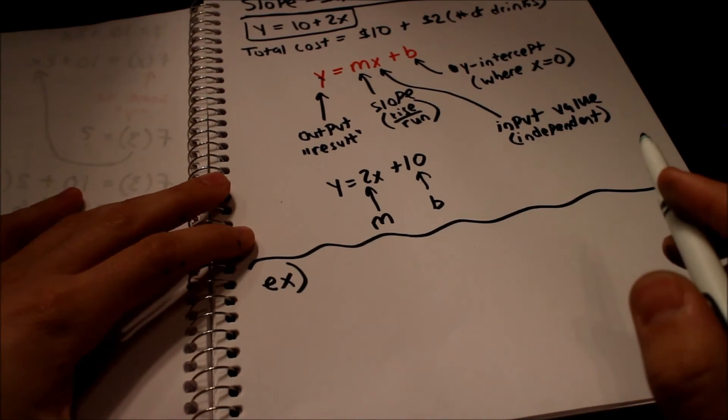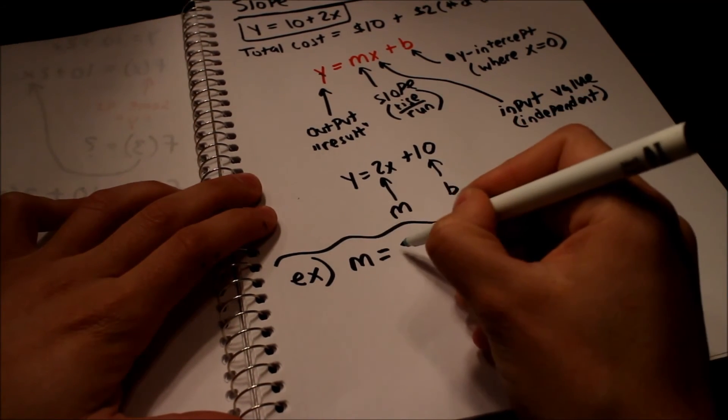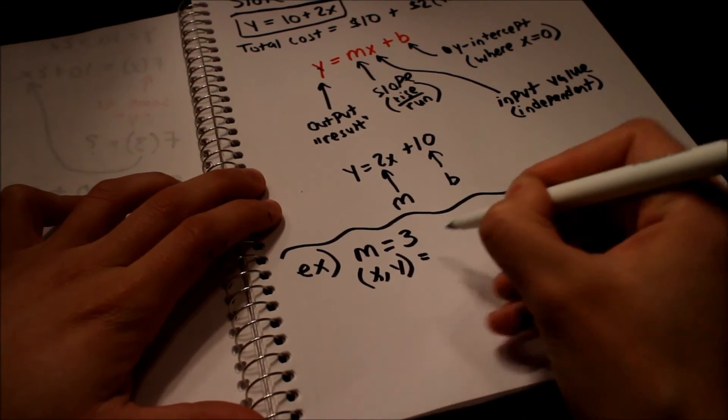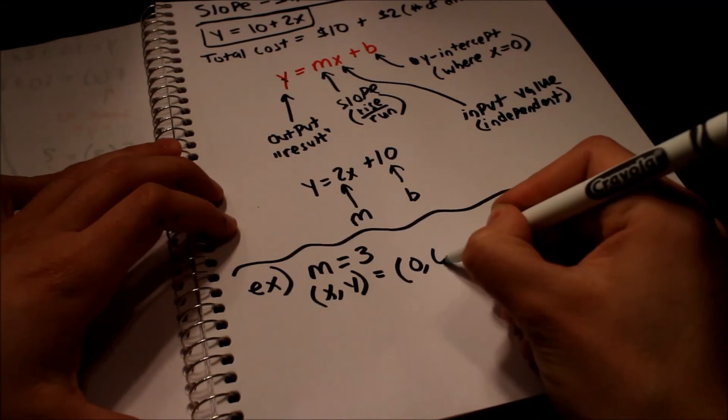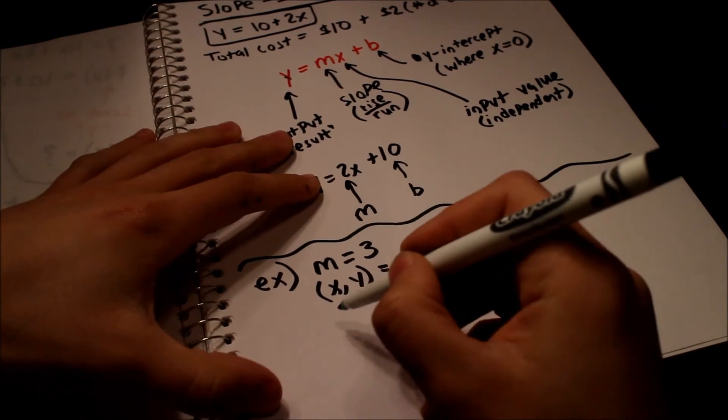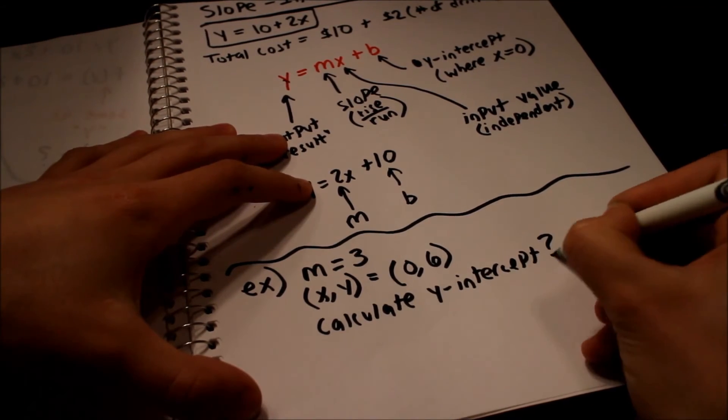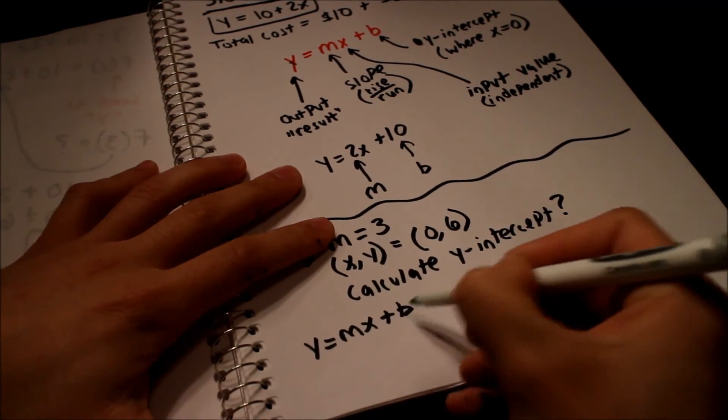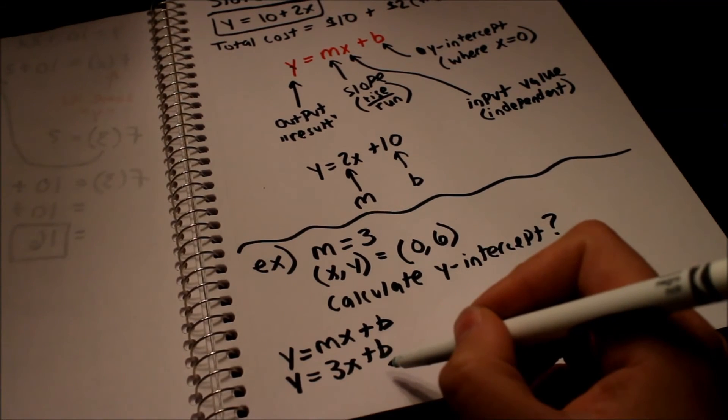Let's say that they give you the slope and they give you a point on the graph. So let's say they say, hey, if your slope m, let's say m equals 3. And you're given a point x, y, like this x, y, they give you a point on the graph. And let's say that point is x equals 0, y equals 6. So they ask you, hey, go ahead and calculate b, or your y-intercept. What would that be? What's our y-intercept? So if we look at the equation, remember, y equals mx plus b. So we already know what m is. So we can go ahead and simplify this to y equals 3x plus b. So we want to find b. So what the heck is b?